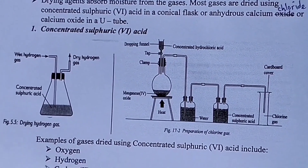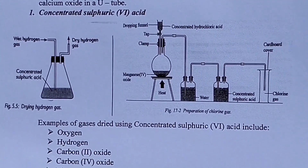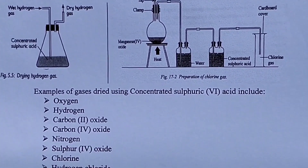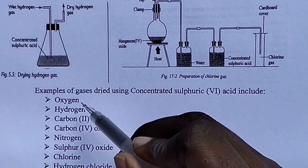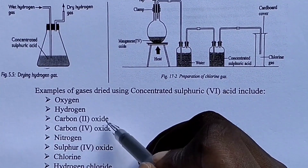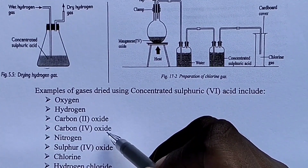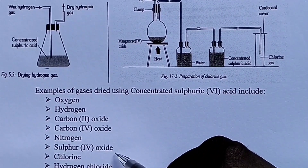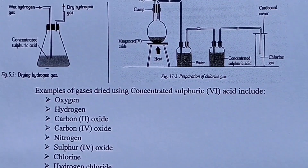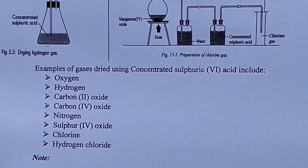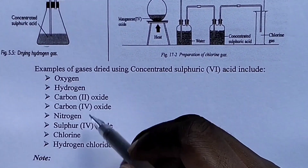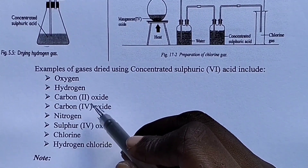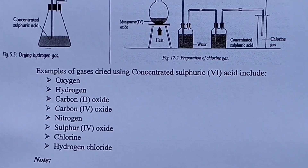Examples of gases dried using concentrated sulfuric acid include: oxygen gas, hydrogen gas, carbon monoxide gas, carbon dioxide gas, nitrogen gas, sulfur(VI) oxide gas, chlorine gas, and hydrogen chloride gas. All these are gases which can be dried using concentrated sulfuric acid.